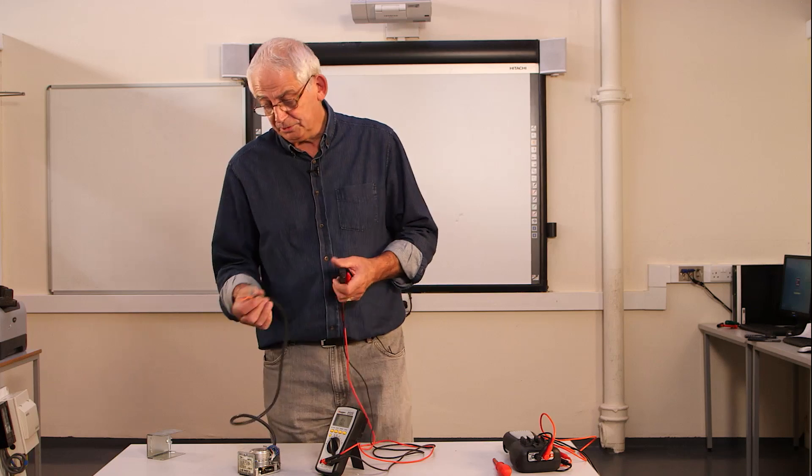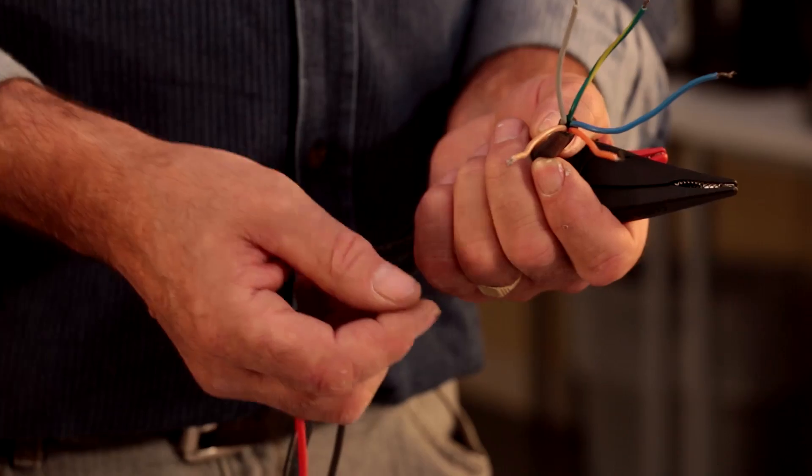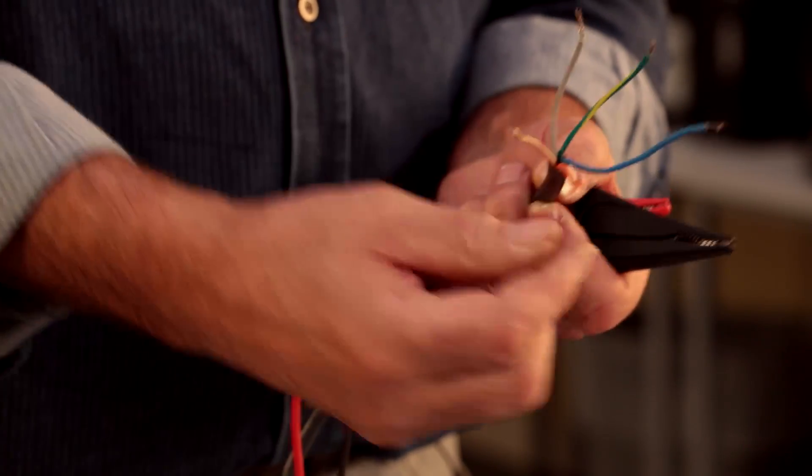First of all, the motorized valve's got five cores, we know that. The cores that drive the motor are the brown and the blue.